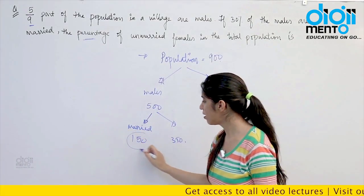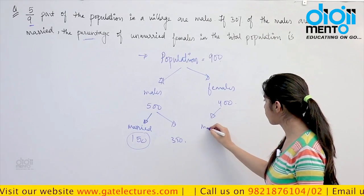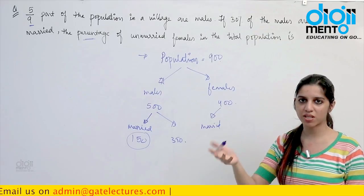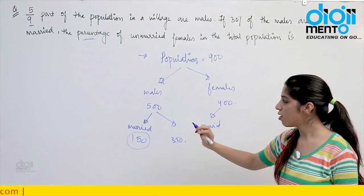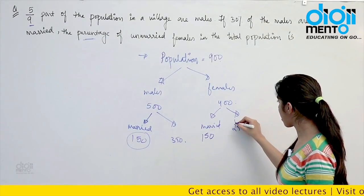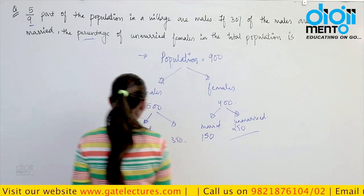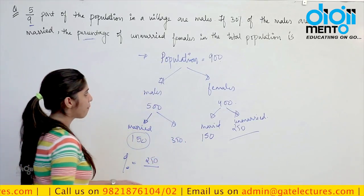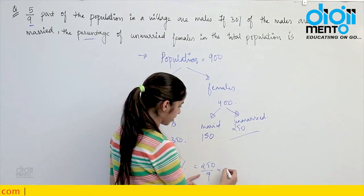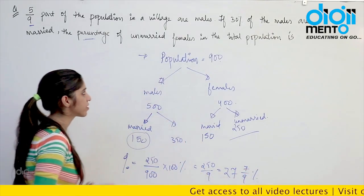Since 150 males are married, 150 females are also married, leaving 400 − 150 = 250 unmarried females. Percentage of unmarried females in total population = 250/900 × 100 = 250/9 ≈ 27 7/9%. This approach using assumed values gives real numbers, so calculation mistakes are less likely. Whenever the answer is required in percentage, assume a convenient number — 100 is not always the best choice.